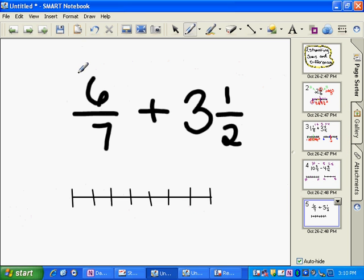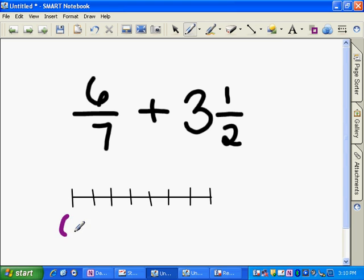Now this one, 6 sevenths is between 0 and 1, okay? It's part of a whole number. It's not a mixed number yet. So it falls between 0 and 1.